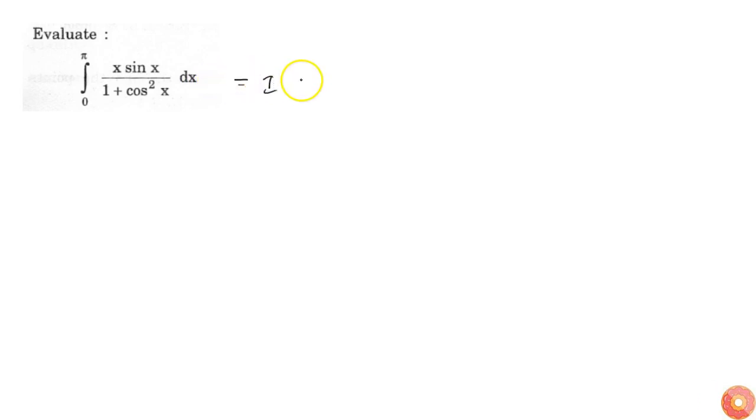So let's say this is equal to I. I will make a substitution that is θ equals π minus x. Now the limits just become reversed, that is from π to 0, and x becomes π minus θ.